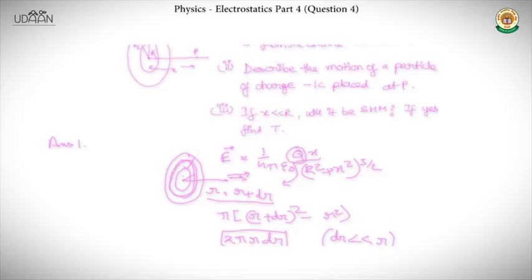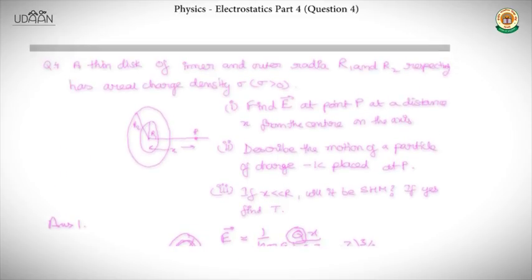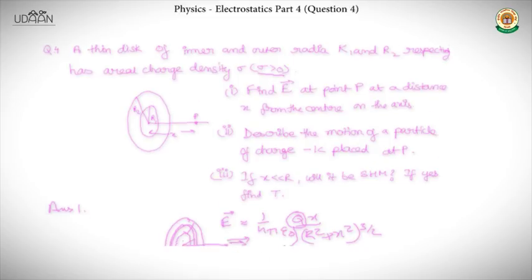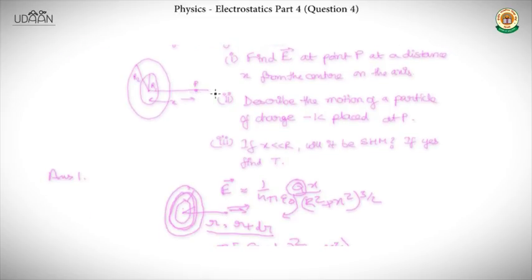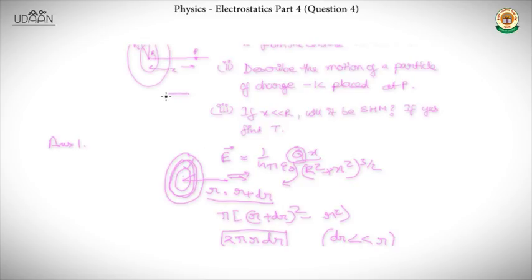The second part says: describe the motion of the particle of charge minus 1 coulomb placed at P. Since sigma is greater than 0, a charge of minus 1 coulomb will be attracted towards the center and will tend to travel towards it.